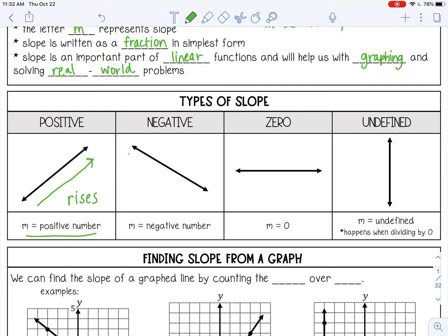And negative means the line is going to fall from left to right. And that's when m is a negative number, like negative 10 or negative 3 fourths.